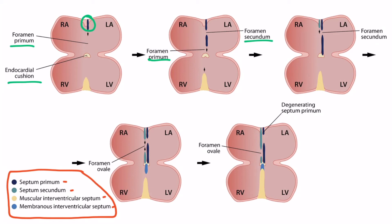A little later, the foramen primum is gone, and now the septum secundum begins to grow from the top part of the heart. The septum secundum simultaneously grows from the top and the bottom of the heart, then stops to leave an opening known as the foramen ovale. This intricate formation of the atrial septum allows fetal blood to bypass the lungs and go directly from the right atrium to the left atrium. After birth, the foramen ovale usually closes and the atrial septum fully forms as all of the tissues fuse together.